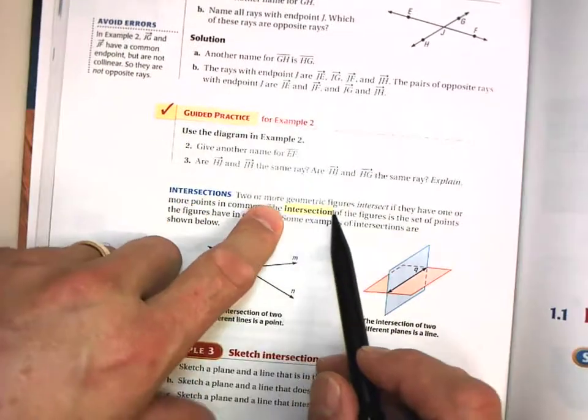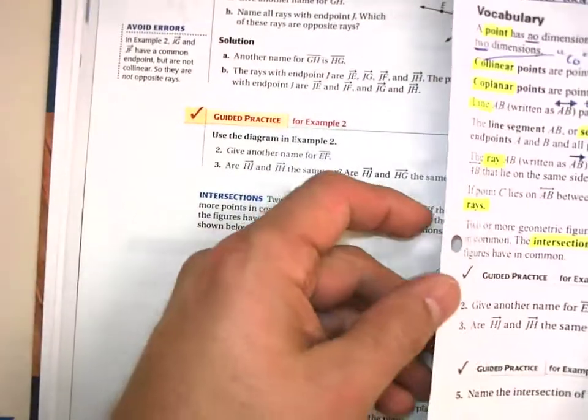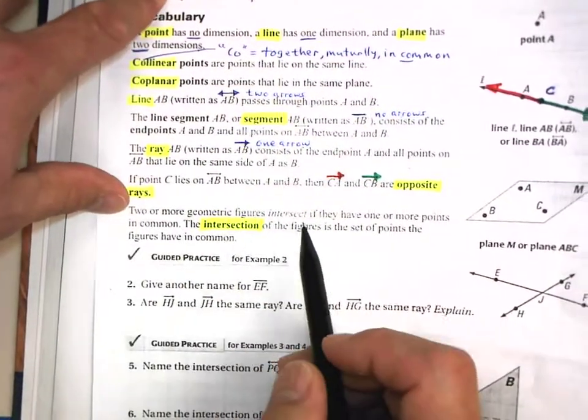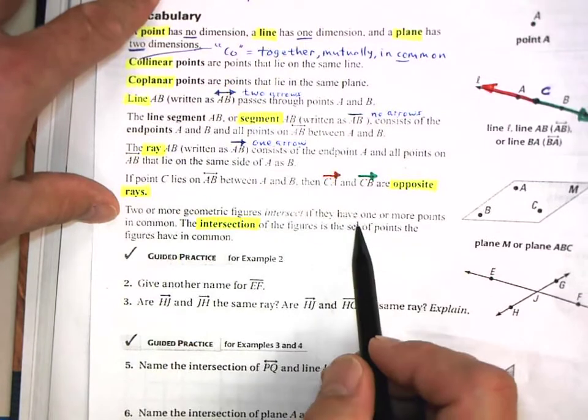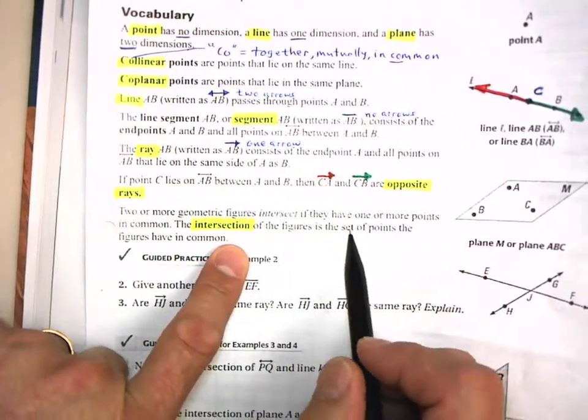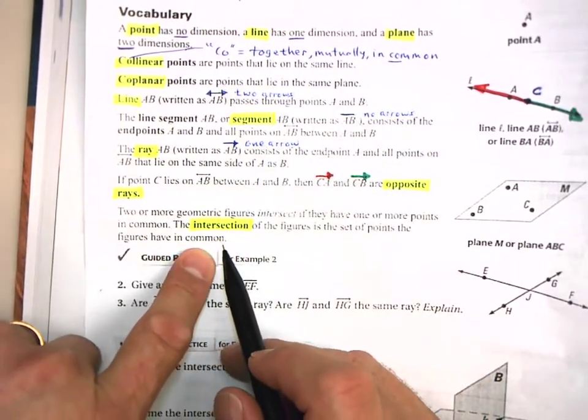Intersections. Let's keep an eye on here. Intersections. Two or more geometric figures intersect. And here it is. I do have that in your notes. Two or more geometric figures intersect if they have one or more points in common. The intersection of the figures is the set of points the figures have in common.